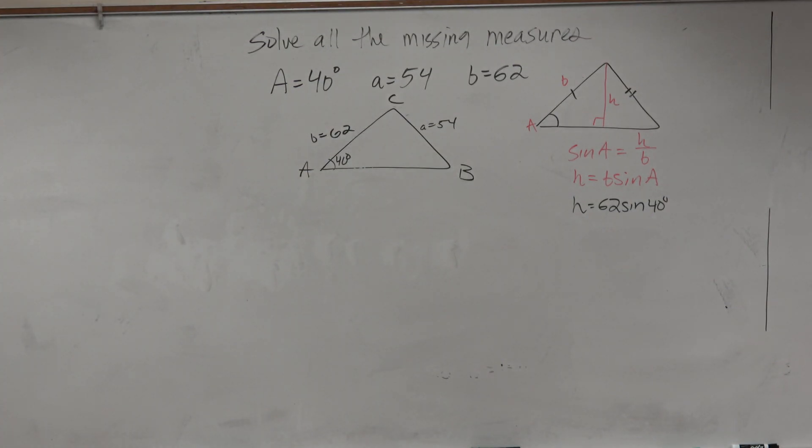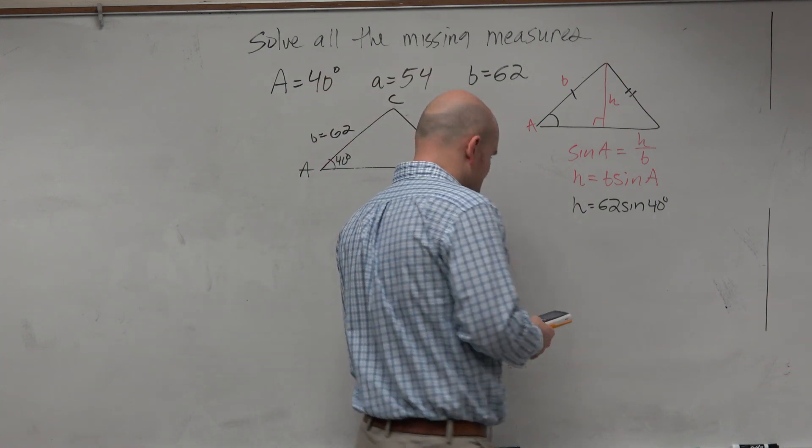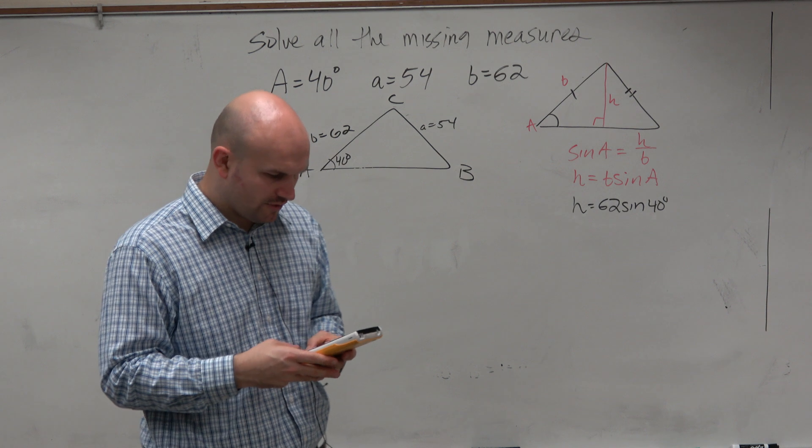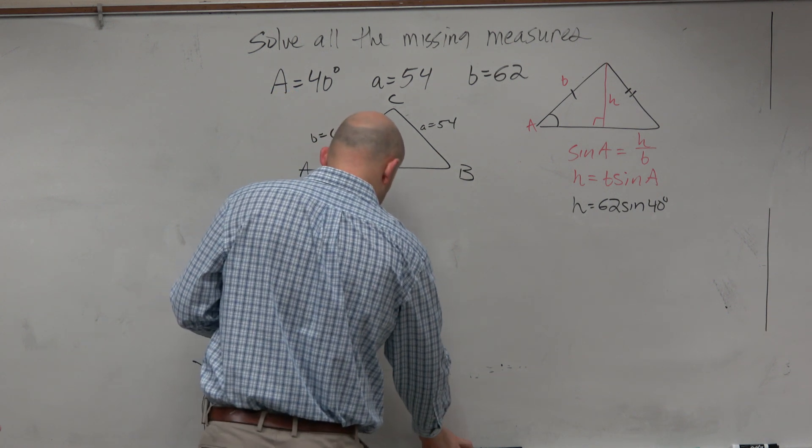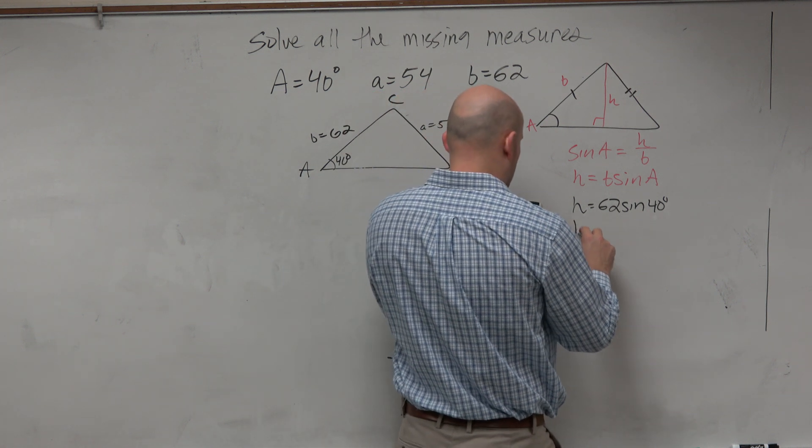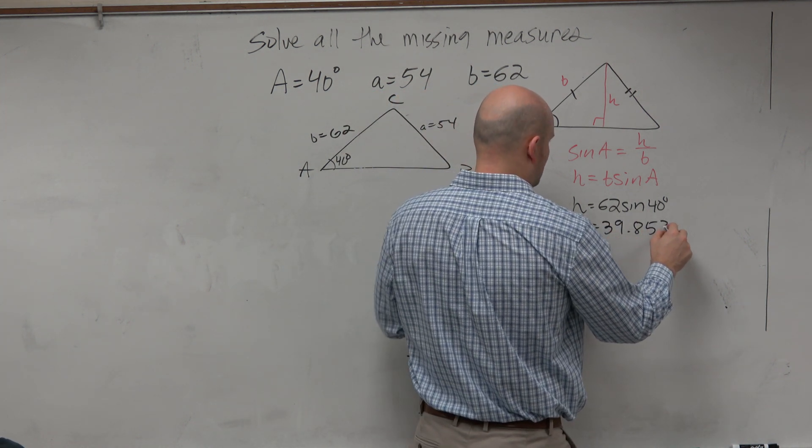Wherever my calculator is, there it is. So why don't we just type that into our calculator to make sense of this? I just type in 62 times the sine of 40, and I get H is equal to 39.853.